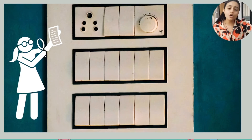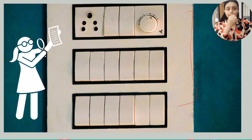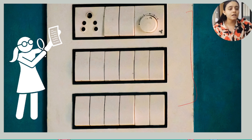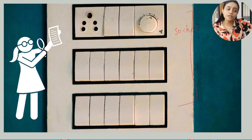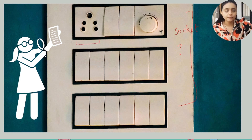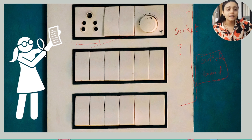Now have you all seen this at your home? What is this? We all see this at home. This is a socket. And what does the socket involve, students? The socket is part of this whole switchboard. This whole switchboard involves a socket, switches, and a regulator for a fan and all these kinds of switches.